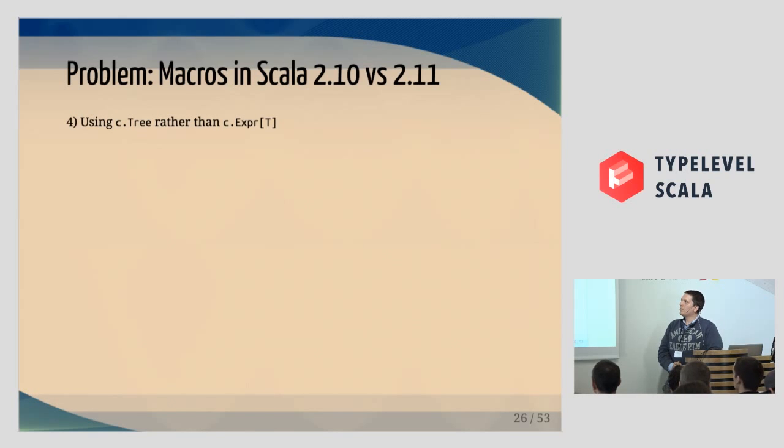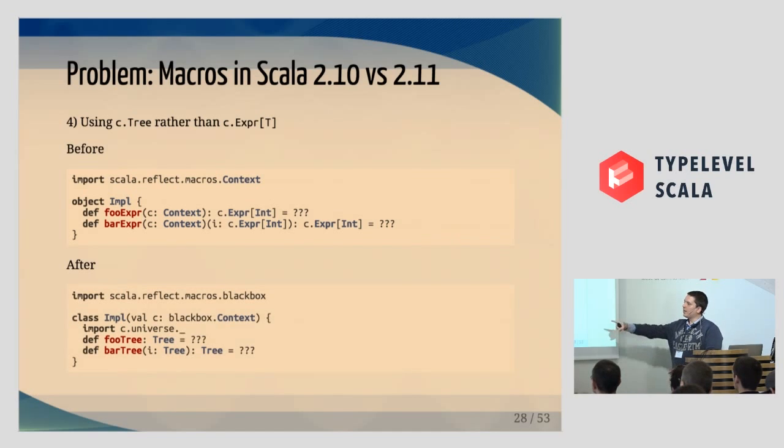And thirdly, there's some more beneficial things that have come in Scala 2.11, the ability to define things in terms of untyped trees, or rather trees without the type annotation, the expression. This allows you to just write things like that on the bottom, rather than everything in terms of expression, which typically means you just pull the tree out, do something with it, and then stick it back in an expression. That's not available in Scala 2.10.